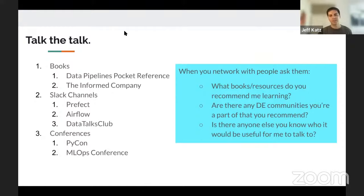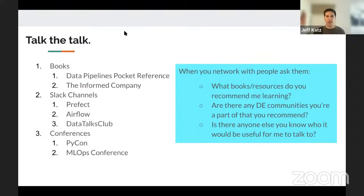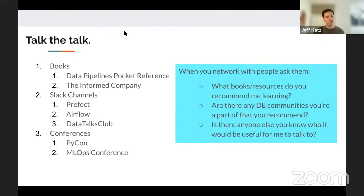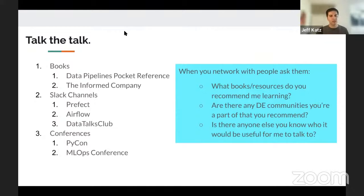When you network with people, you want to get deeper into the community. When you talk to data engineers on Slack or set up calls with them, ask: what books or resources would you recommend? Are there data engineering or engineering communities you're part of that you'd recommend — meetups or Slack communities? Is there anyone else you'd suggest I talk to? This way you can expand your network. And when you start talking to other data engineers, they'll say 'I read that book too' — you'll start sounding more and more like a peer.